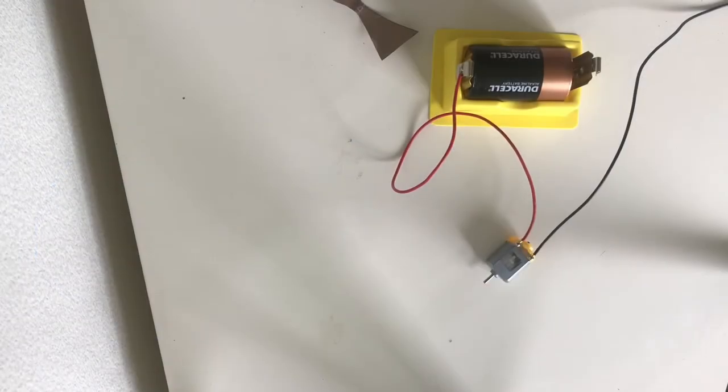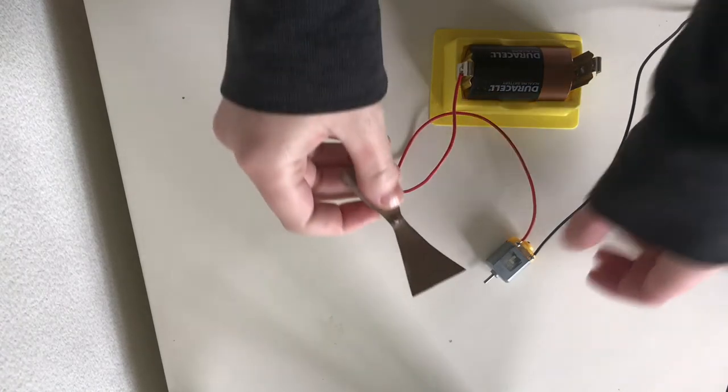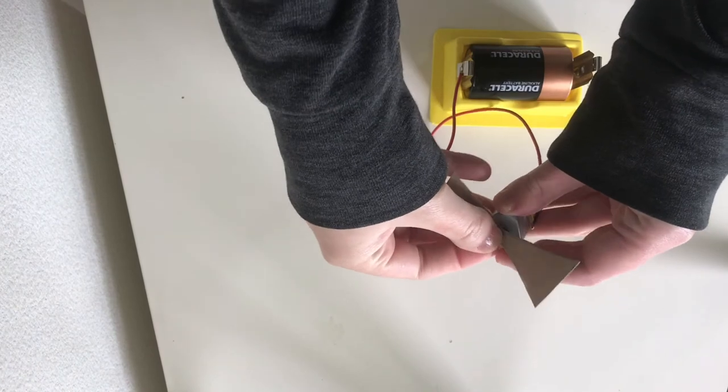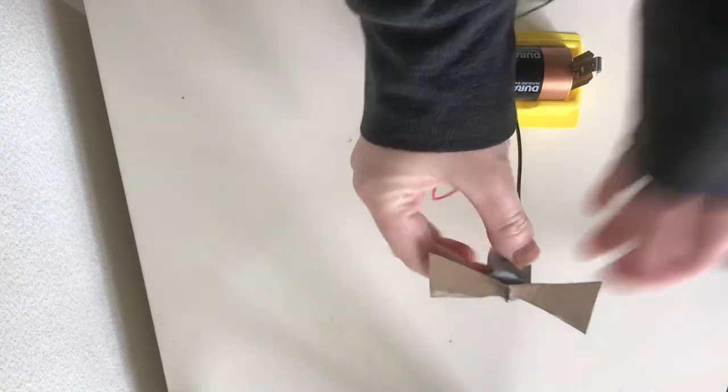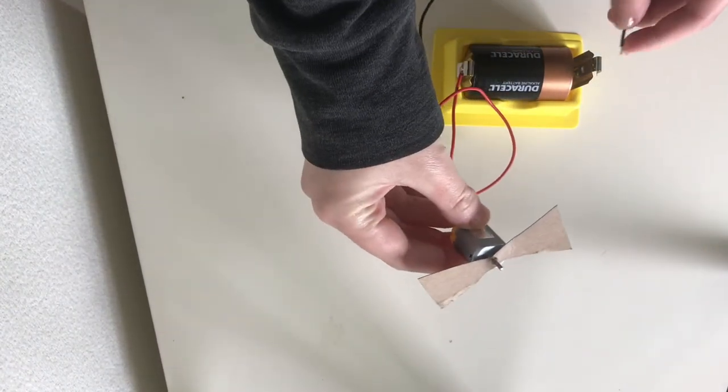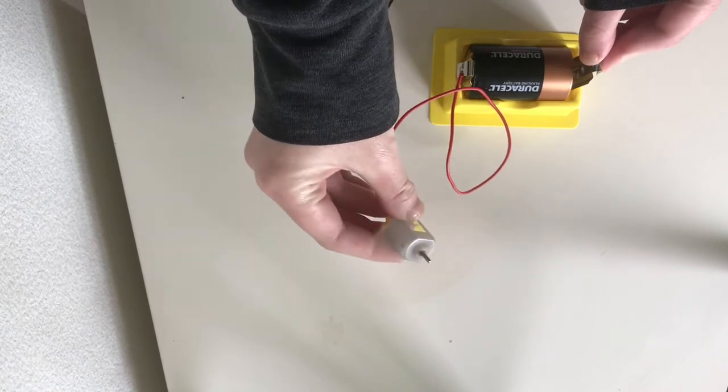Light bulbs aren't the only thing that we can power with our battery. Here I have a little motor, and I made this little propeller to put on it. And now when I connect it to the other side of my battery, I have a little fan.